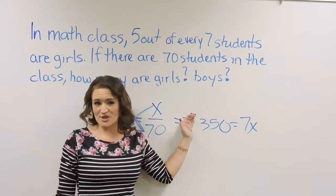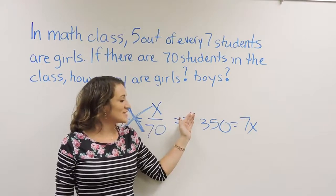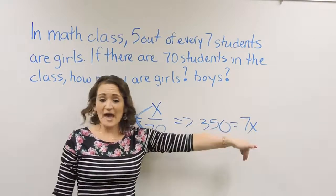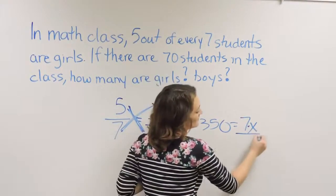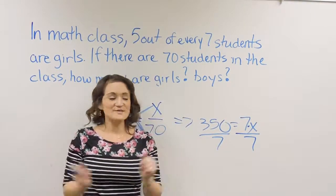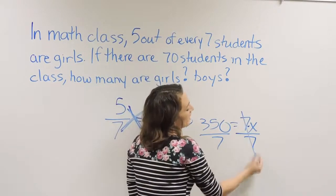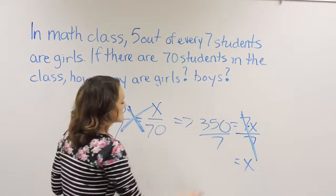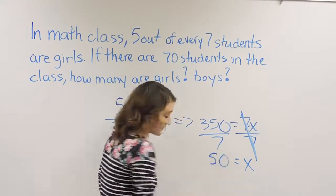This is a one-step equation to solve. The only thing we need to do is divide out the coefficient. Remember that this is 7 times X. The opposite of multiplication is division, so we're going to divide both sides by 7. On the right-hand side, it's going to cancel, and we're left with X = 50.